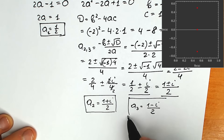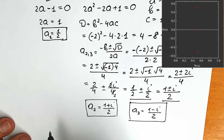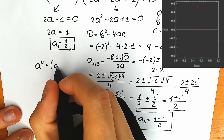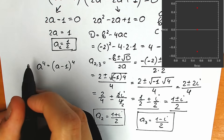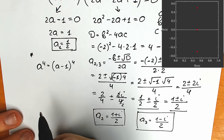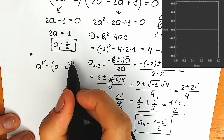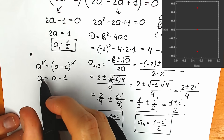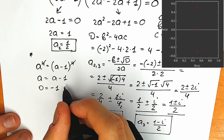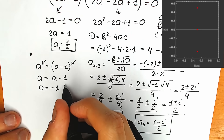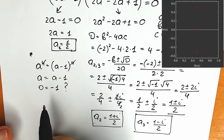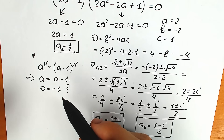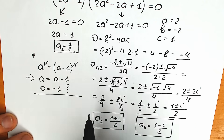Now a few thoughts about this question — because a lot of students, as I mentioned at the beginning, might think: let's just cancel the fourth power from both sides, getting a = a minus one, and then cancel a to get 0 = −1, which is confusing. The key thing students forget is absolute value. When you cancel an even power like fourth on both sides, you must place absolute value signs — because a can be positive or negative.